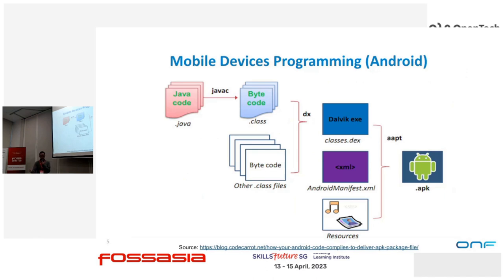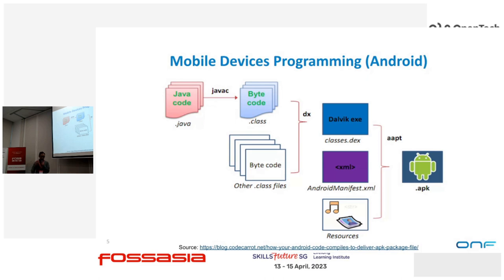Similarly, with the mobile device — for example, Android. You can have very complex apps. You use the Java programming language, compile it, put it into the class with some manifest, pack it into an APK, and then put it on the Play Store or wherever. Your application can then run on any hardware that uses the Android operating system.